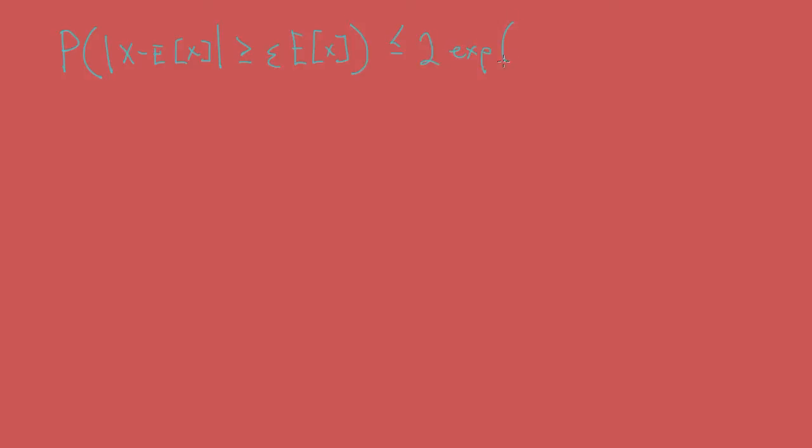So we can directly plug in our variables of interest into this inequality, and then note to have an epsilon-delta good approximation algorithm, we require that the probability of error be less than delta, or in other words, delta must be less than or equal to the right-hand side expression of the Chernoff bound. We can then use simple algebra to isolate m and give a lower bound for m in terms of our other variables of interest, namely n, k, epsilon, and delta.